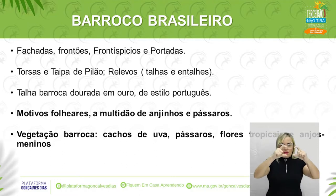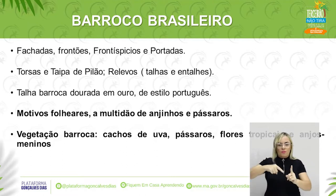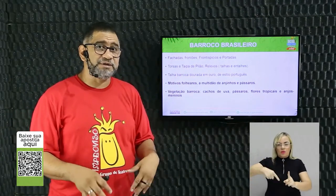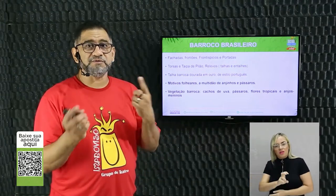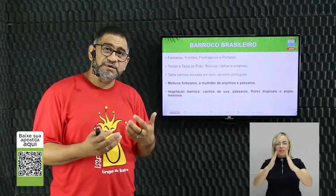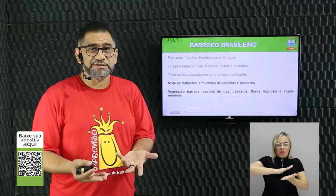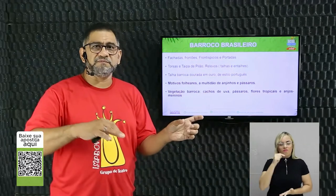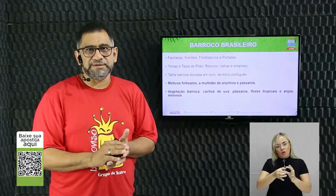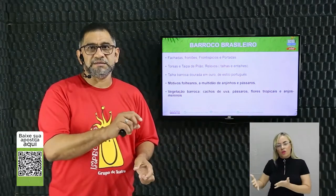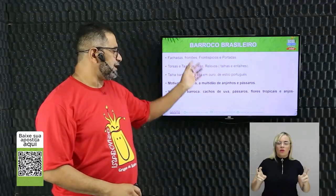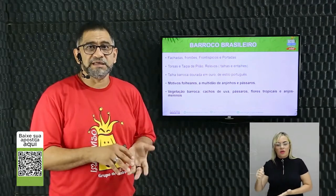O frontão é a peça triangular ou circular no alto da igreja. Toda igreja barroca tem uma porta principal que chama muito a atenção — a portada. Se a igreja for rica, tem três portas; muito rica, cinco; mais simples, uma porta apenas. A quantidade de portas indica o nível de investimento da ordem religiosa. Cada igreja tem uma estrutura ligada a um santo ou à Virgem Maria da ordem à qual pertence.